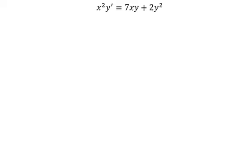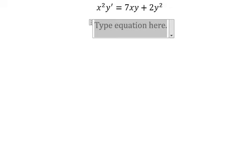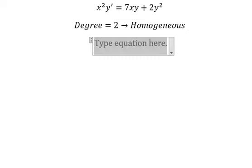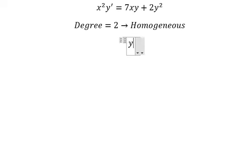Hey guys, welcome back to my channel. Today I want to show you how to answer this one. We have x²y' = 7xy + 2y². The degree is 2, so this is homogeneous. I will put y = vx.